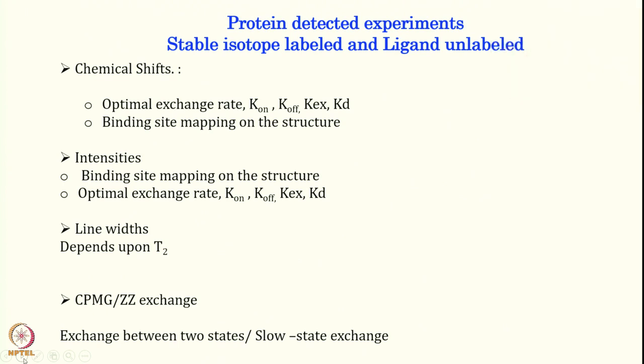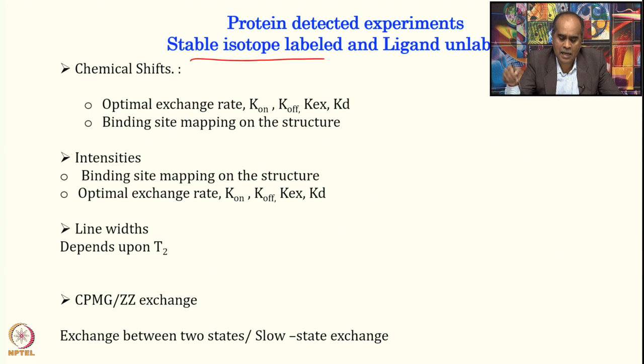The changes that happen in these amino acids can be captured when we do protein-based NMR methods. For protein-detected experiments, you need to first label the protein with a stable isotope, while the ligand can be unlabeled. Since protein molecules are big, to get resolution and residue-specific information, we need to enhance the resolution by isotopically labeling these proteins. However, our ligand can be unlabeled. What we are going to monitor here is the chemical shift.